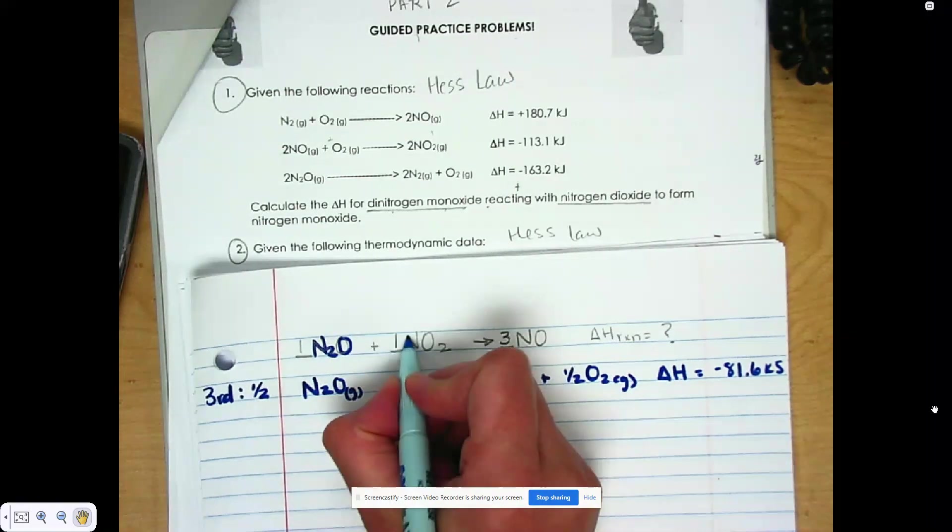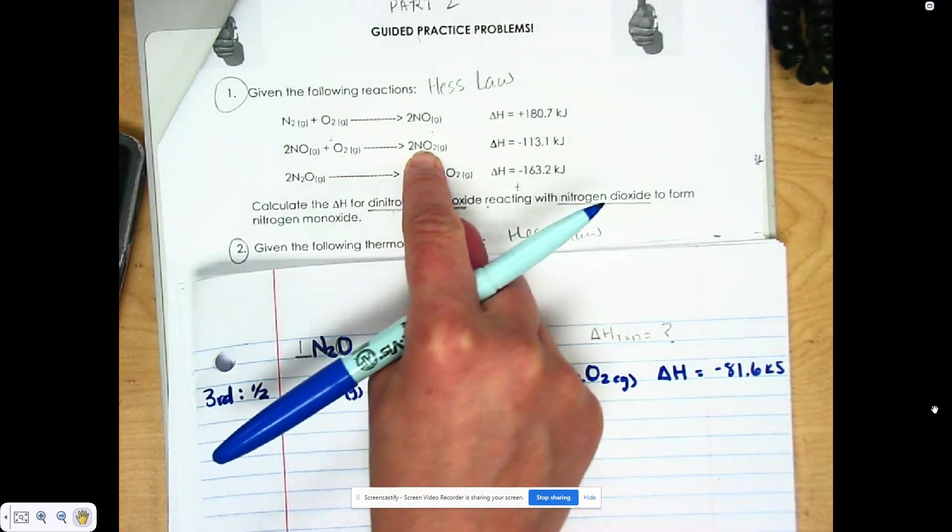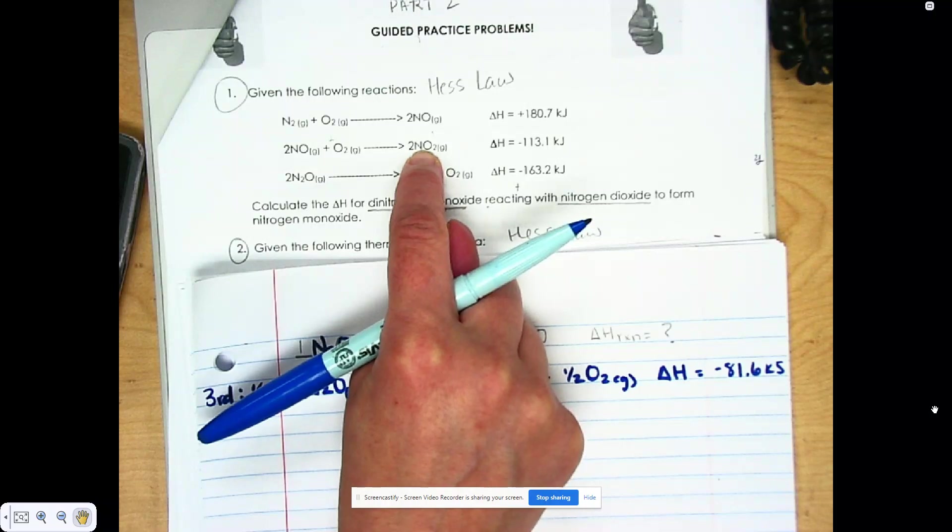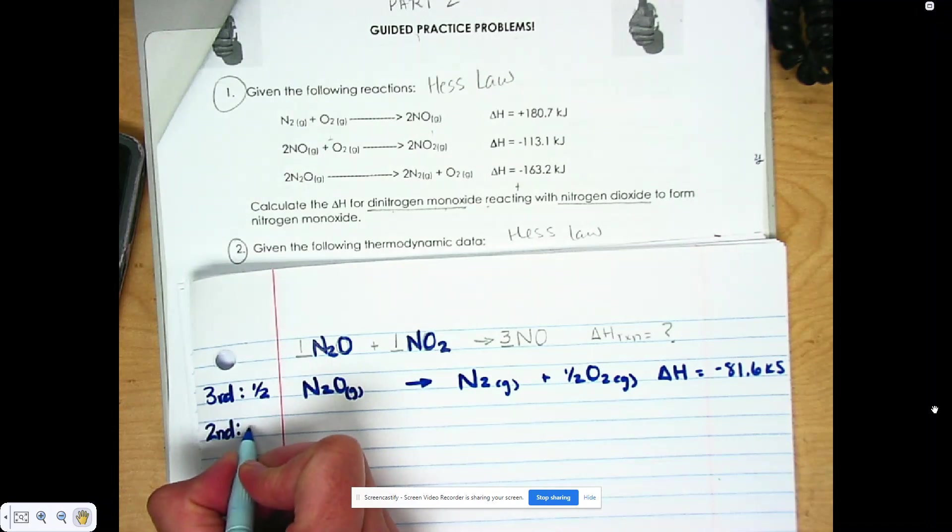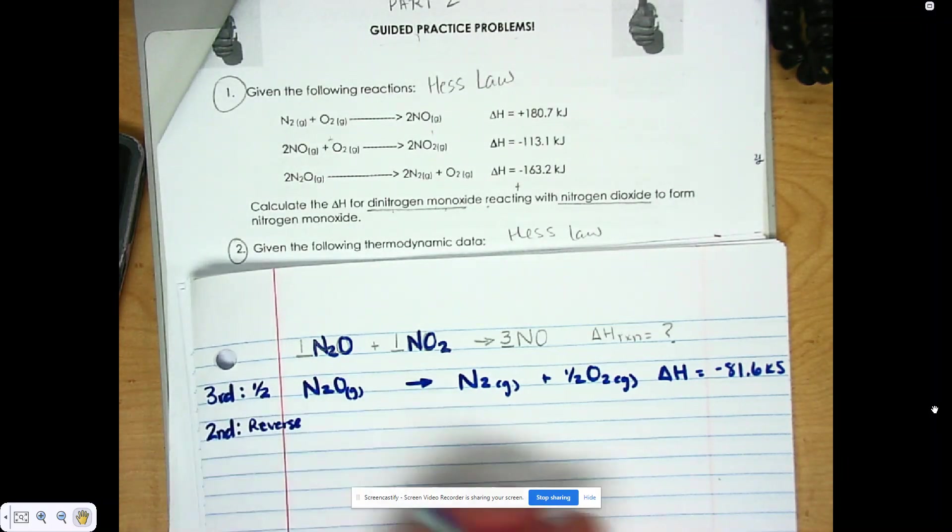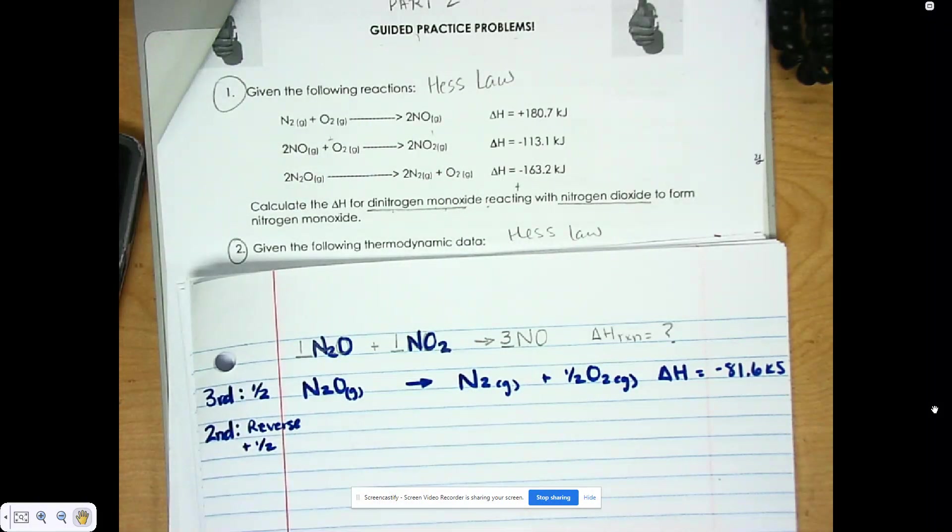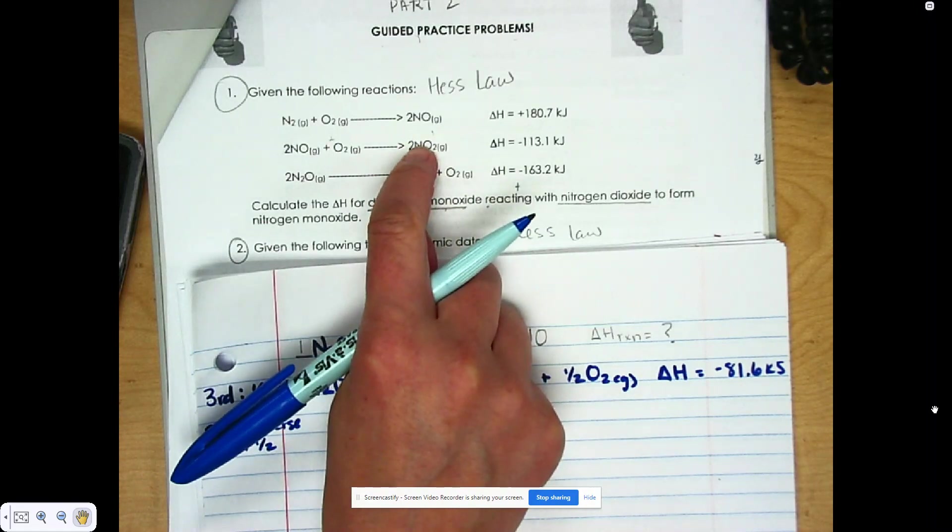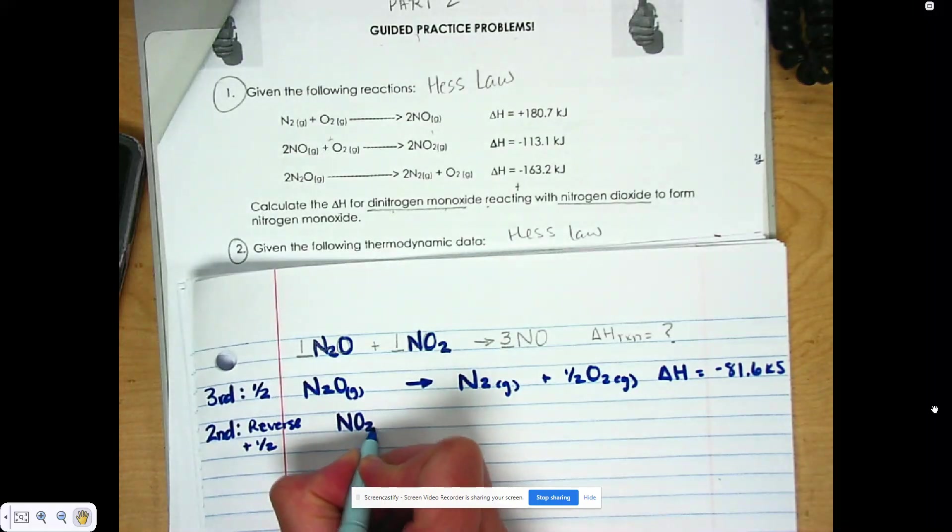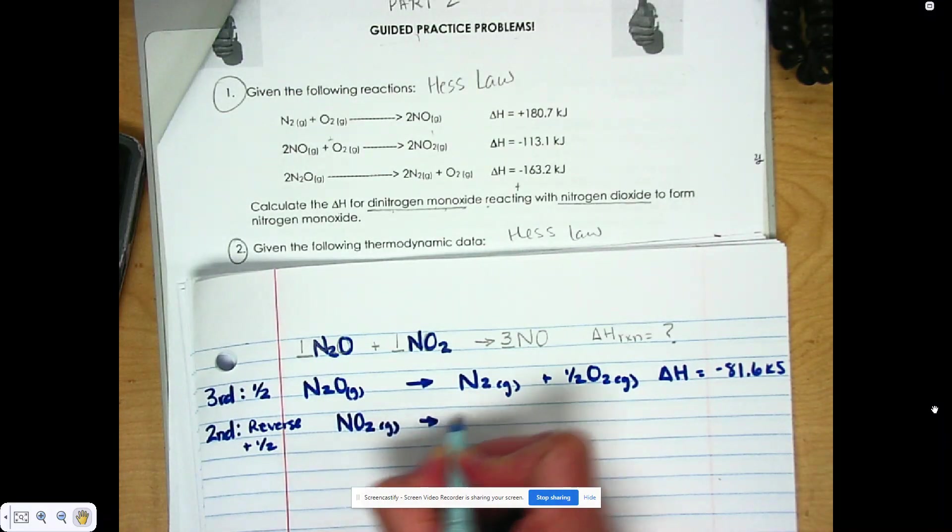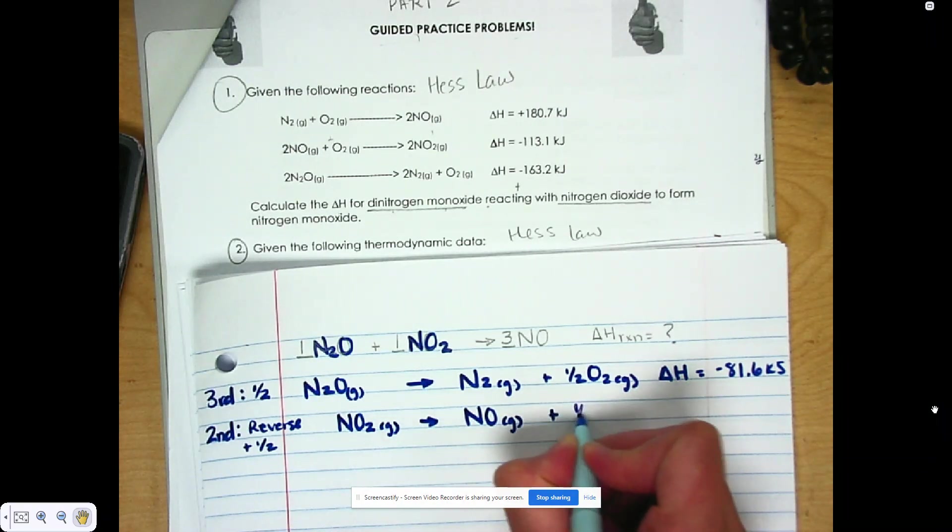All right, so now we're done with this one, and we're going to go to NO2. So NO2 is on my second equation, but you'll notice that it's on the product side. So that means I have to flip my second equation. So I'm going to reverse it. And I also have to divide it by two. So when I divide this by two, these go away, and I end up with NO2 produces NO plus one half O2.